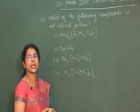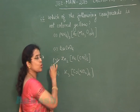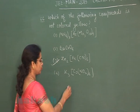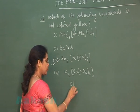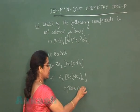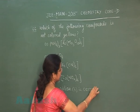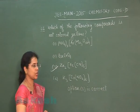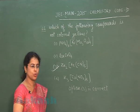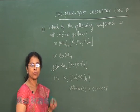The third compound is a compound of zinc and iron. This compound is not yellow colored, so the correct answer is option 3. The fourth option is a compound of cobalt, which is also a yellow colored compound.